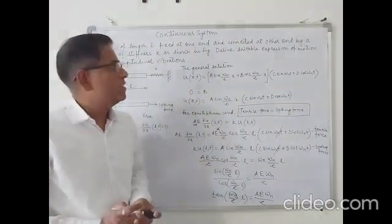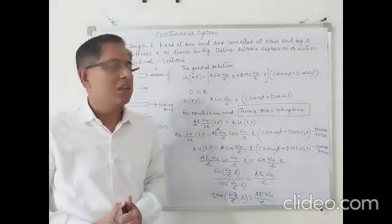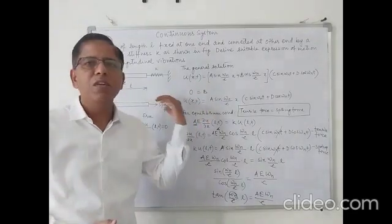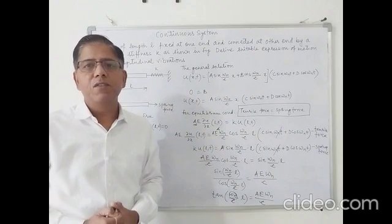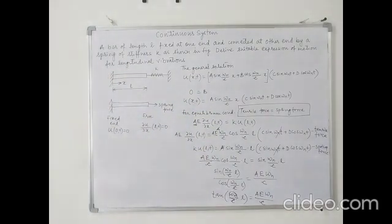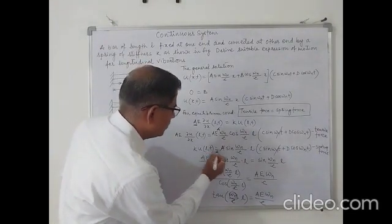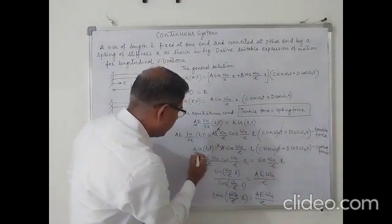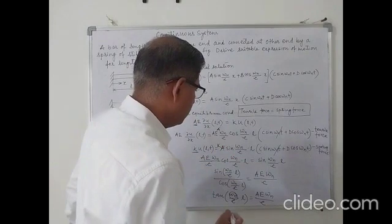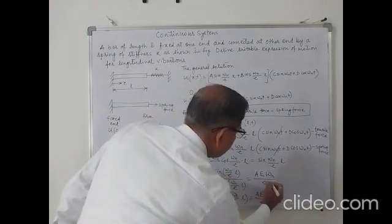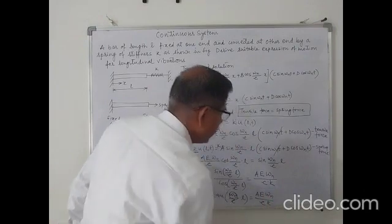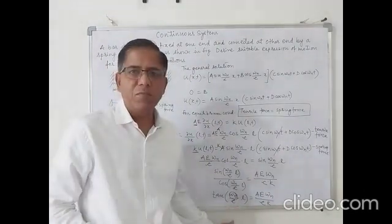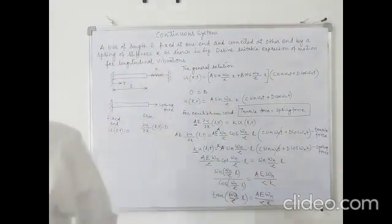I hope you have understood this variety of longitudinal vibration wherein a beam is pulled by a spring and a spring force has to be considered at the free end. Here the expression for u is multiplied by k, so the final expression has terms divided by k. From this final expression you can find out the natural frequency. Thank you very much.